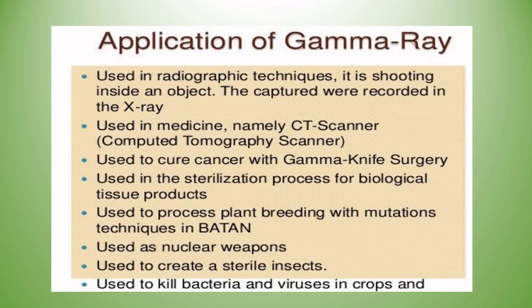Applications of gamma rays: used in radiographic techniques to image the inside of an object, with captures recorded like X-rays. Used in medicine, namely CT scanners (computed tomography). Used to treat cancer with gamma knife surgery. Used in the sterilization of biological tissue products, plant breeding with mutation techniques, and as nuclear weapons. Also used to create sterile insects and to kill bacteria and viruses in crops.